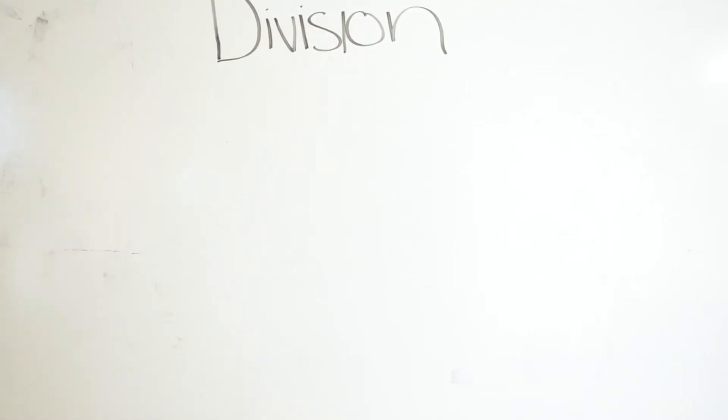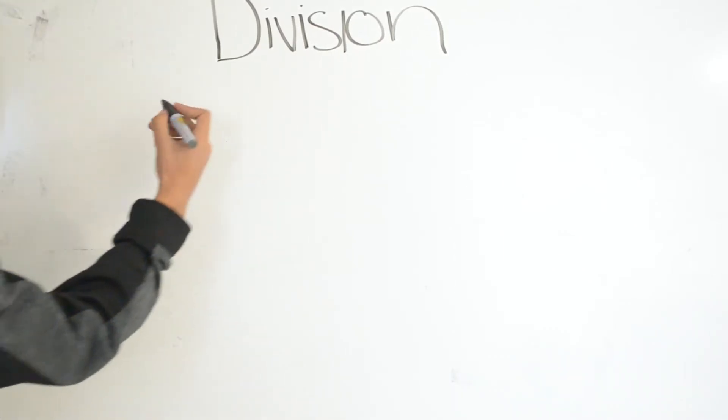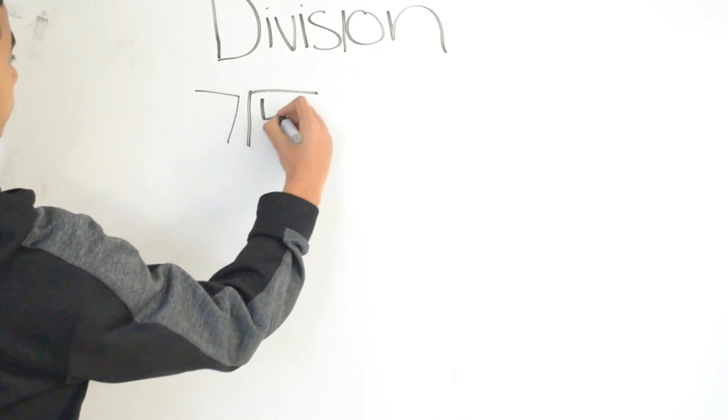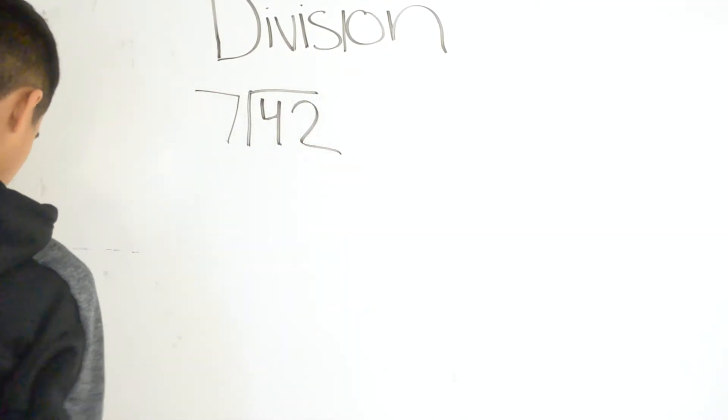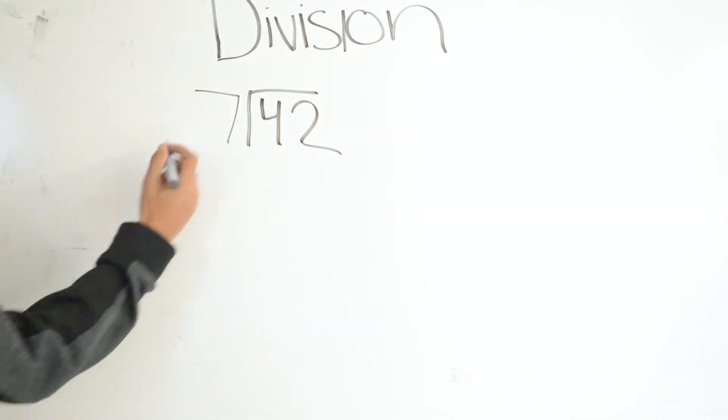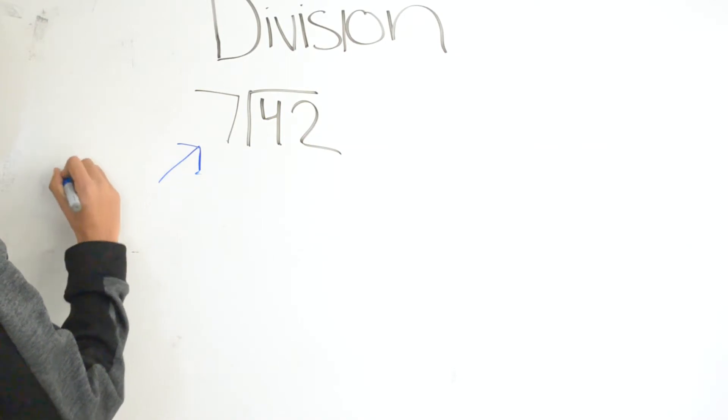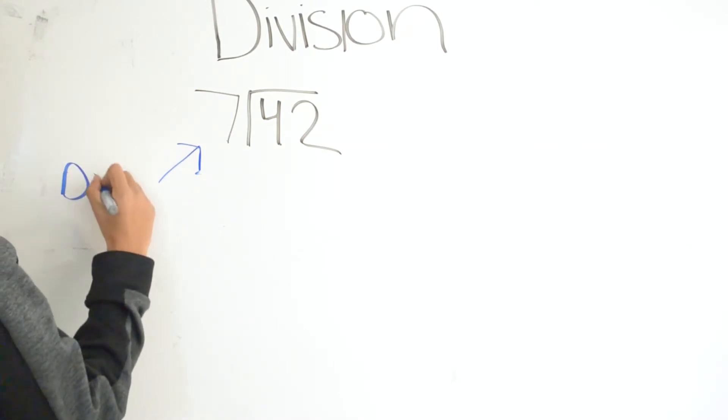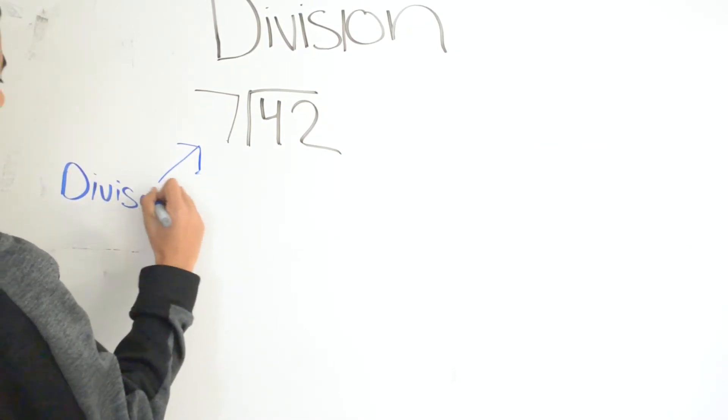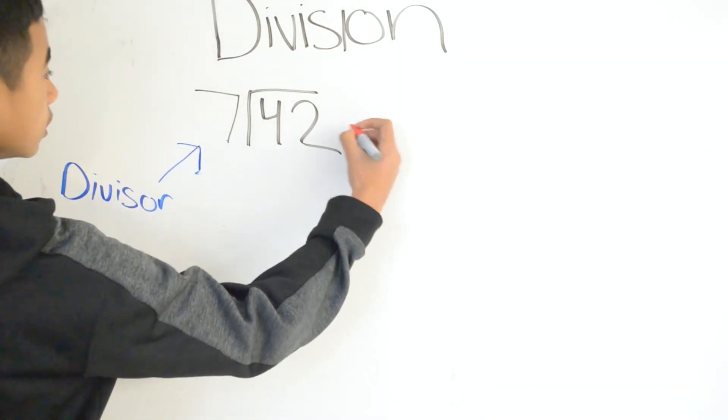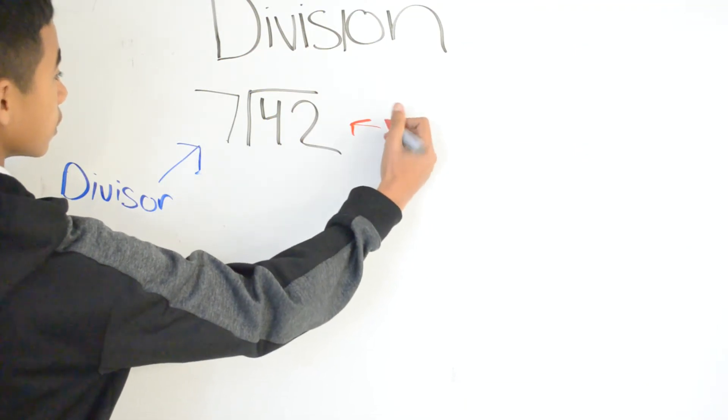Our second example we have 7 divided by 42. Our divisor is 7 and our dividend is 42.